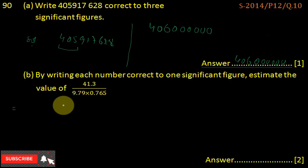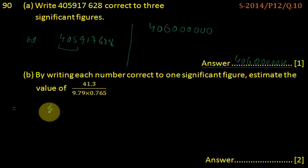So first we convert each number into 1 significant figure. 41.3 can be written as 40, and 9.79 can be written as 10, and 0.765 can be written as 0.8.